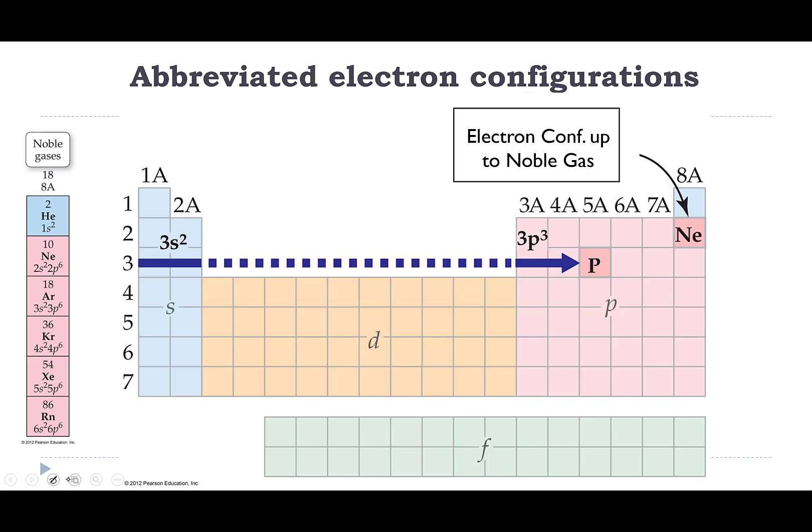What we're going to do is pick the noble gas that's directly behind whatever we're trying to determine the configuration of. For example, if I'm trying to write the abbreviated electron configuration for phosphorus, I'm going to find the noble gas - remember this group right here - I'm going to find the noble gas that's behind it.